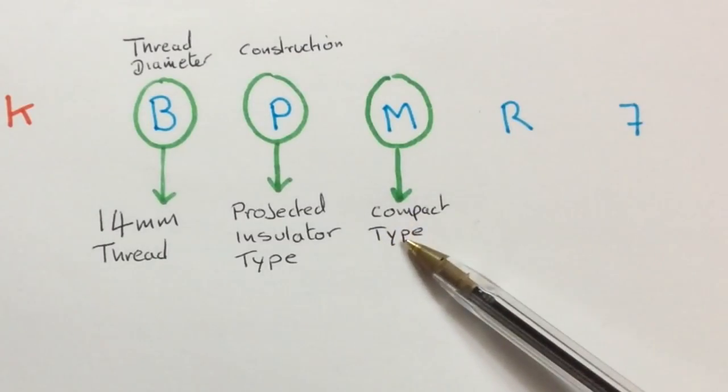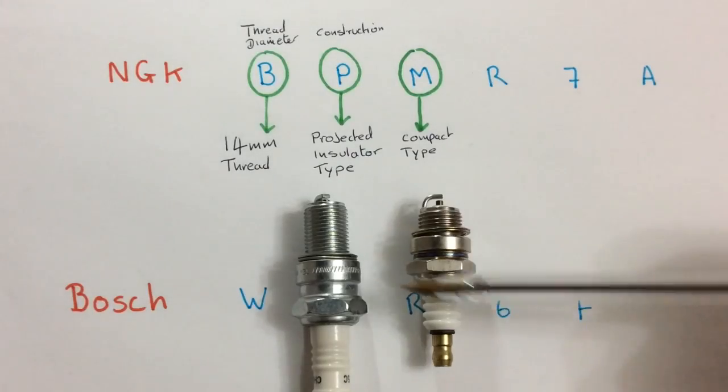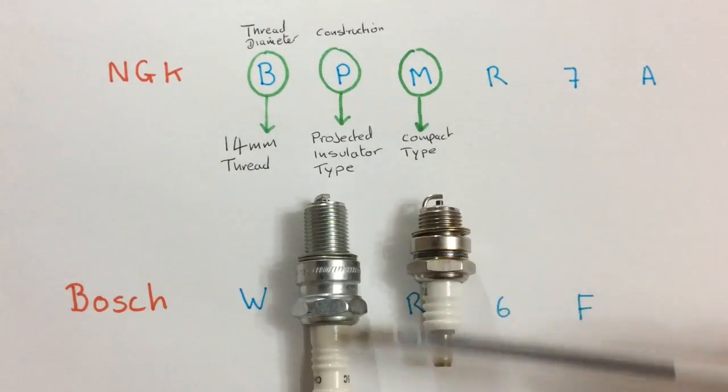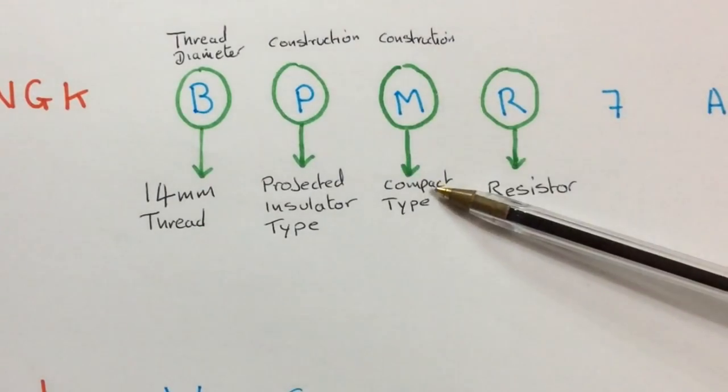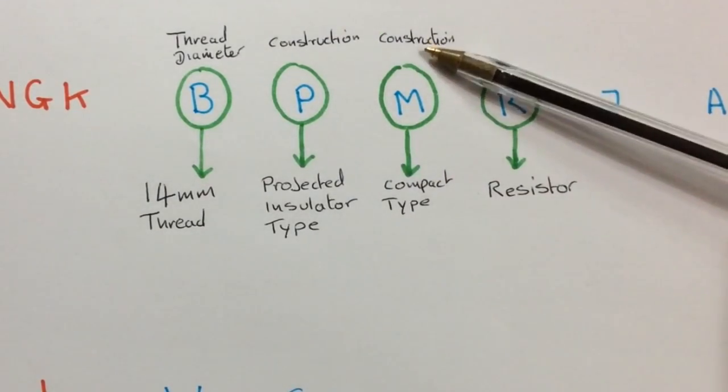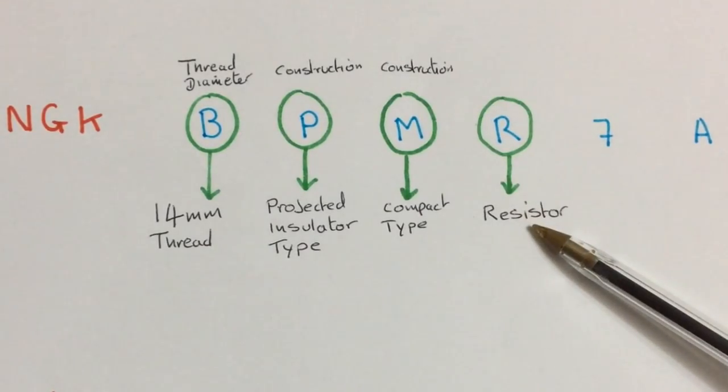M means compact type. It's a compact size when you compare it to some plugs out there. So M means compact type and also relates to its construction. R means that the plug has a resistor built into it.